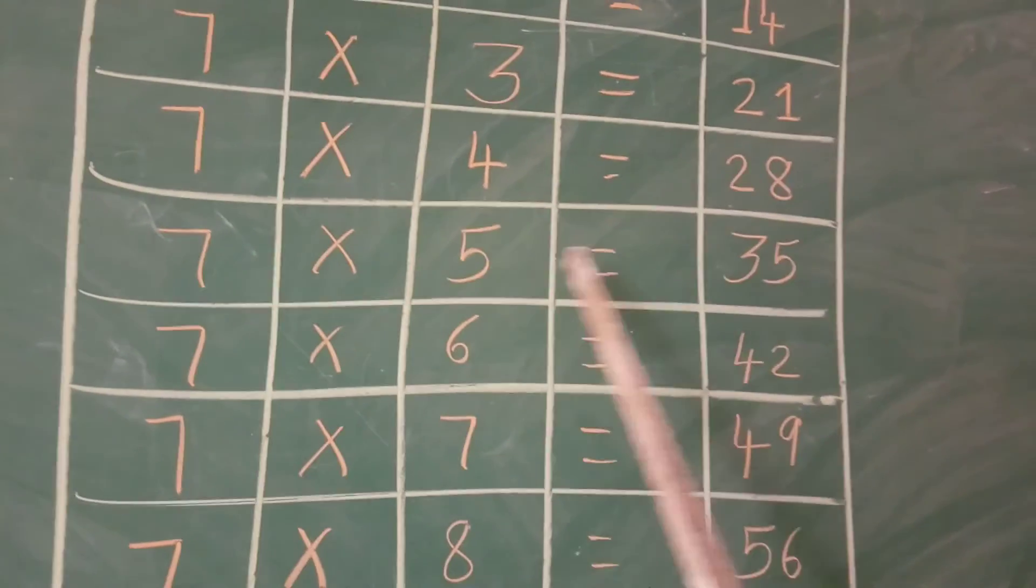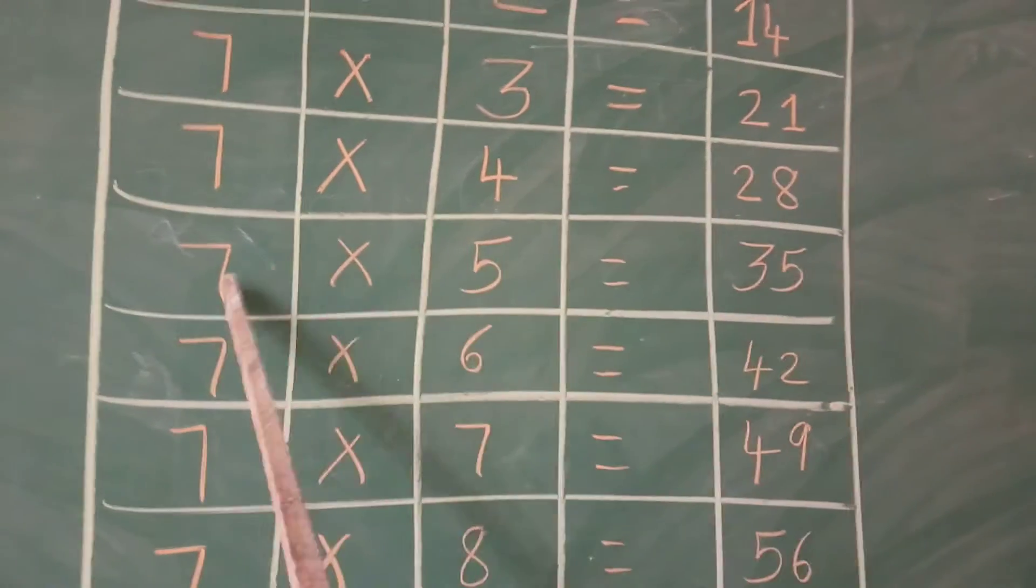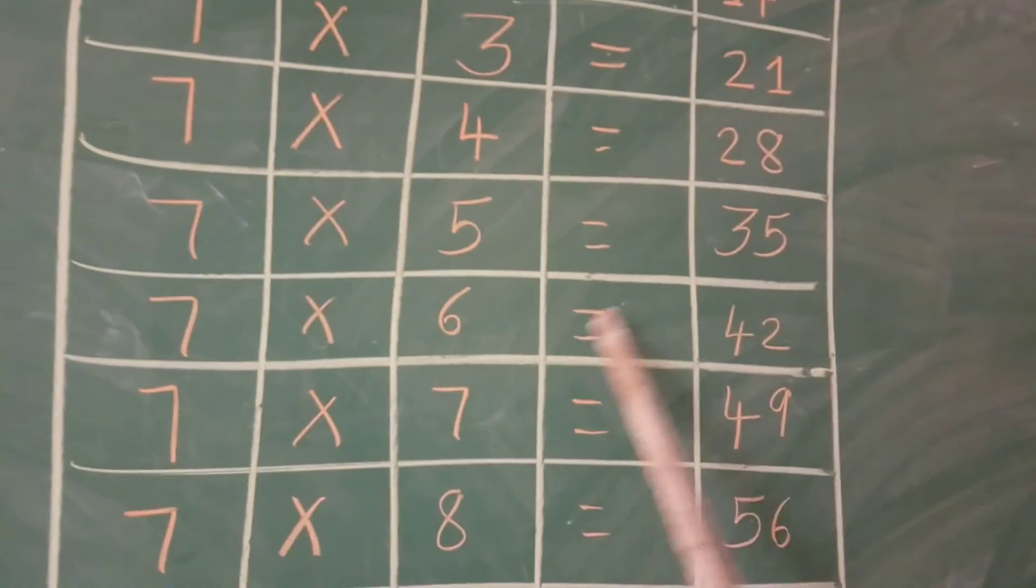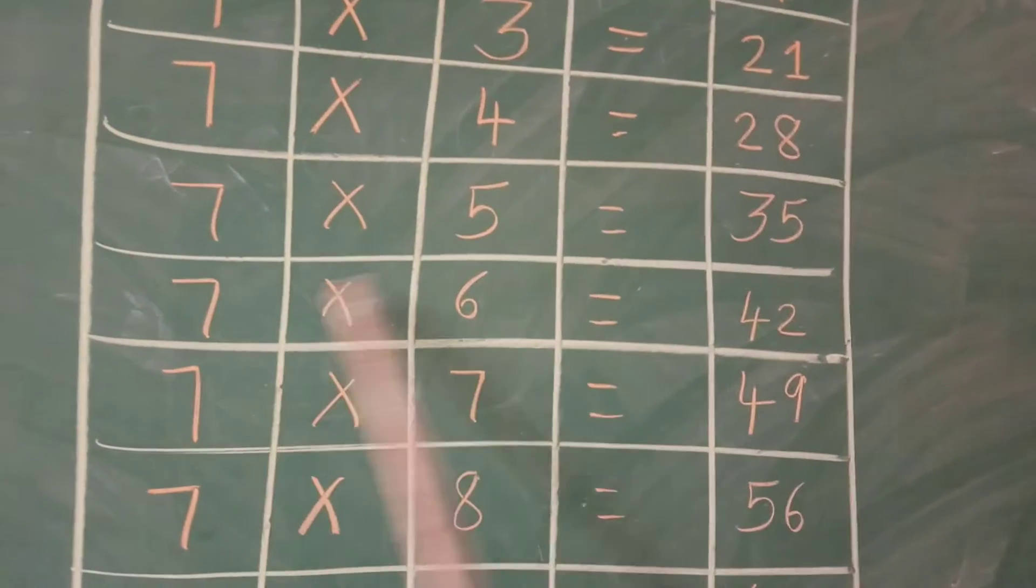7 into 5 is equal to 35. 7 fives are 35. 7 into 6 is equal to 42. 7 sixes are 42.